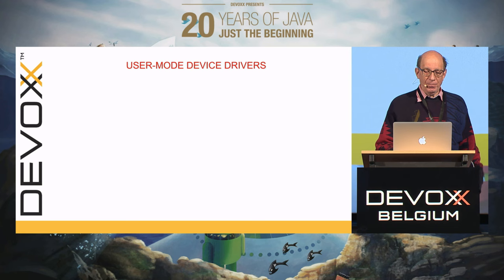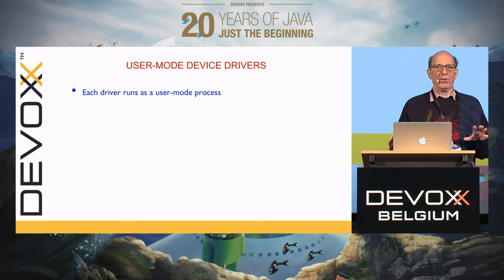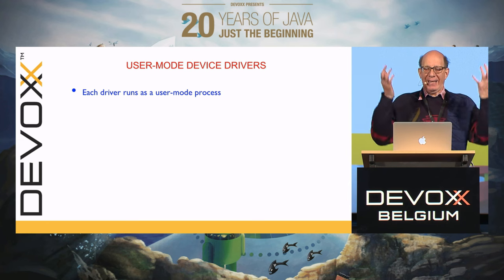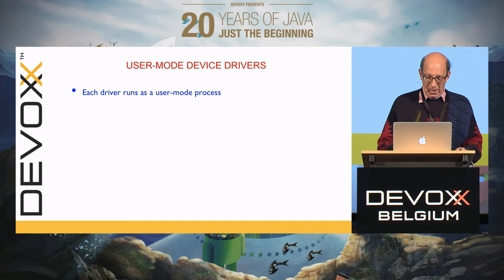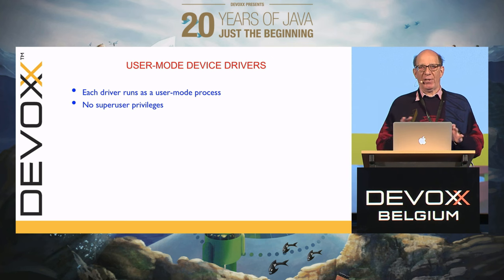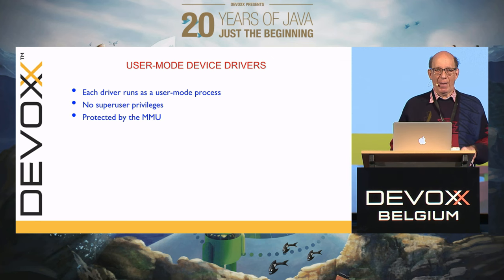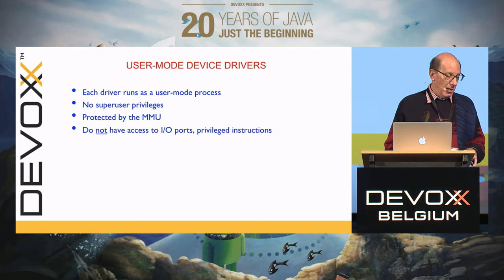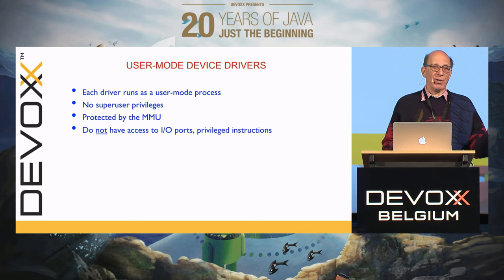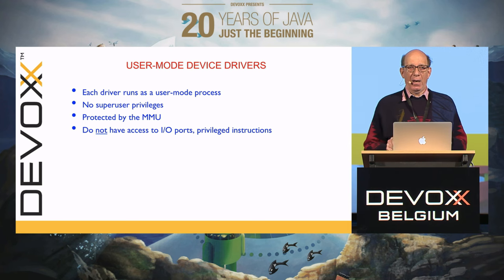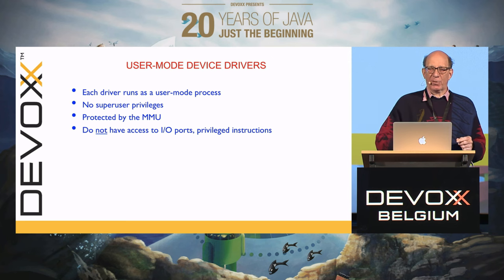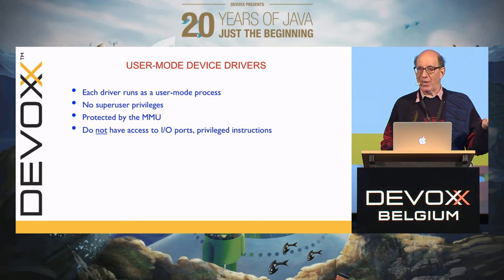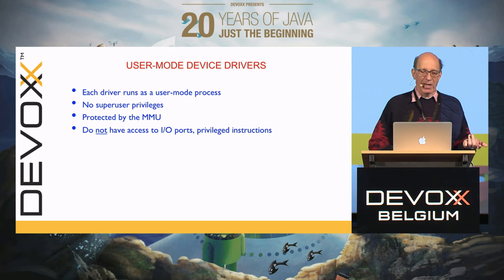Each driver runs as a separate user mode process with the MMU turned on, constrained by the MMU so it can't get out of its address space. It can't do things it's not supposed to do and doesn't have superuser privileges. It doesn't even have access to I/O ports. If the disk driver wants to talk to the disk, it has to make a kernel call providing a list of disk ports and values to write. The kernel first checks whether that process has that permission — if it does, it performs the operation; if not, it gets back an error.